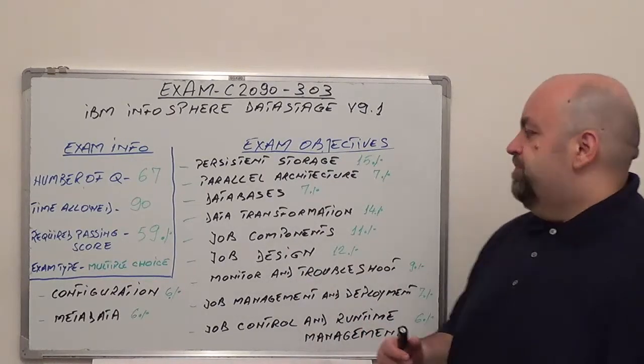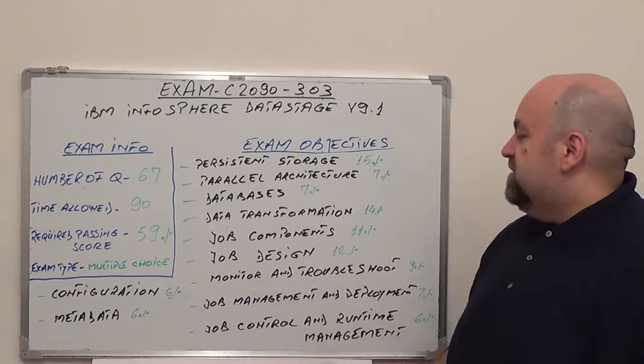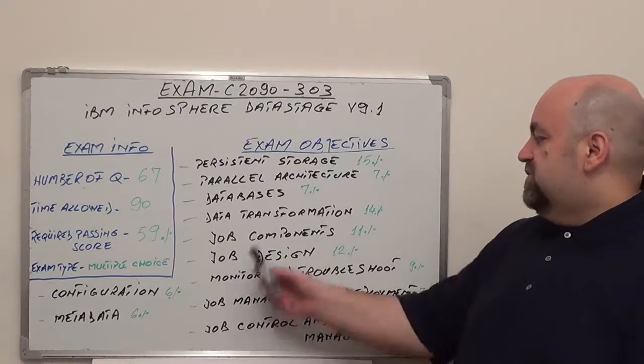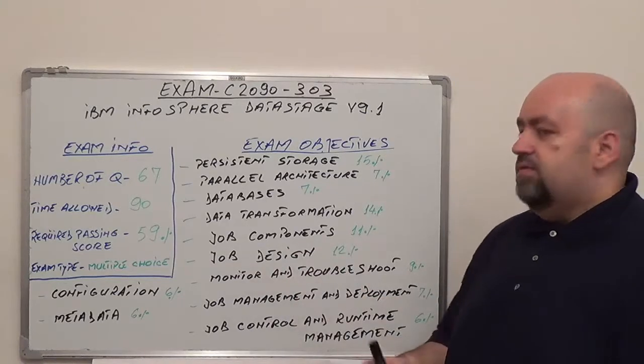Next one is databases, 7% of total questions. Next one is data transformation, with 14% of total questions. Next one is job components, 11% of total questions.